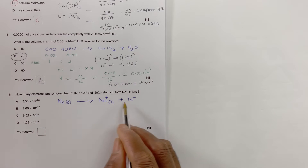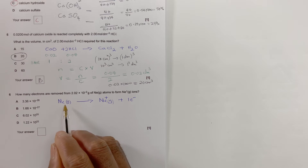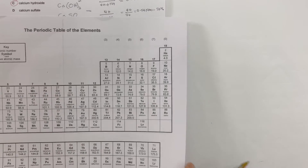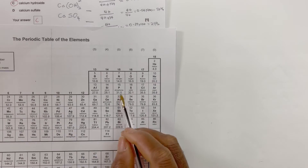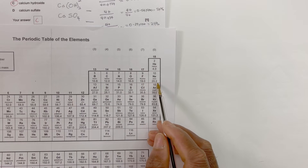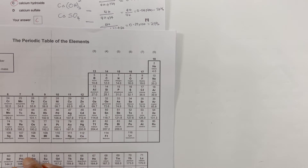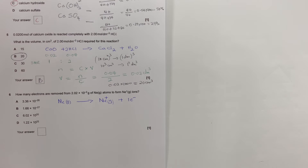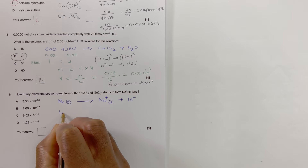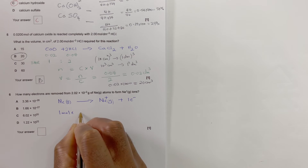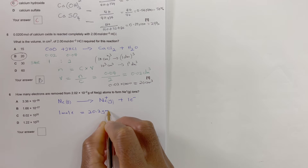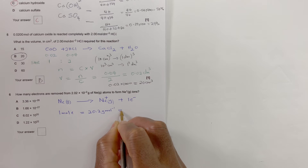That equation is for one mole, and one mole will have a mass — if you look in the periodic table for the mass of neon, neon is 20.2 grams per mole. That's the relative atomic mass of neon: 20.2 grams per mole.